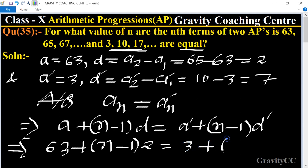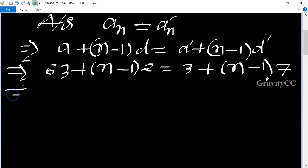So this implies that 63 plus 2n minus 2 equals 3 plus 7n minus 7.